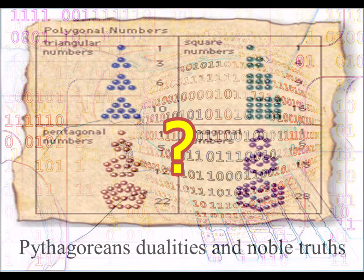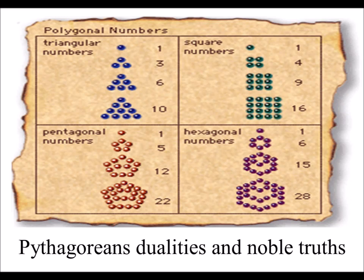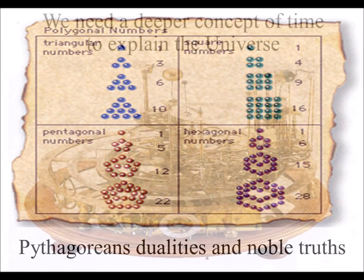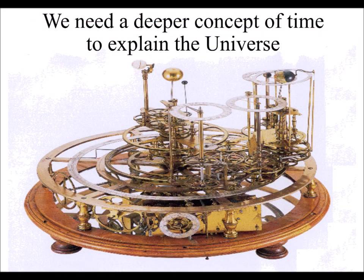Just as in ancient Greece, when we first started using the concept of numbers, we said the universe is based on numbers. And when we first started measuring time, we came up with the idea of a clockwork, mechanical universe.